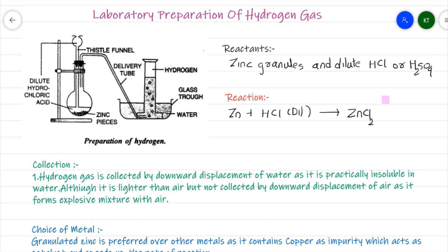The reaction of zinc with dilute HCl gives ZnCl₂ plus H₂ gas — balanced as Zn + 2HCl → ZnCl₂ + H₂. If we use sulfuric acid: Zn + H₂SO₄ (dilute) → ZnSO₄ + H₂. Whenever dilute acid is poured onto zinc metal, the reaction takes place and evolves hydrogen gas.